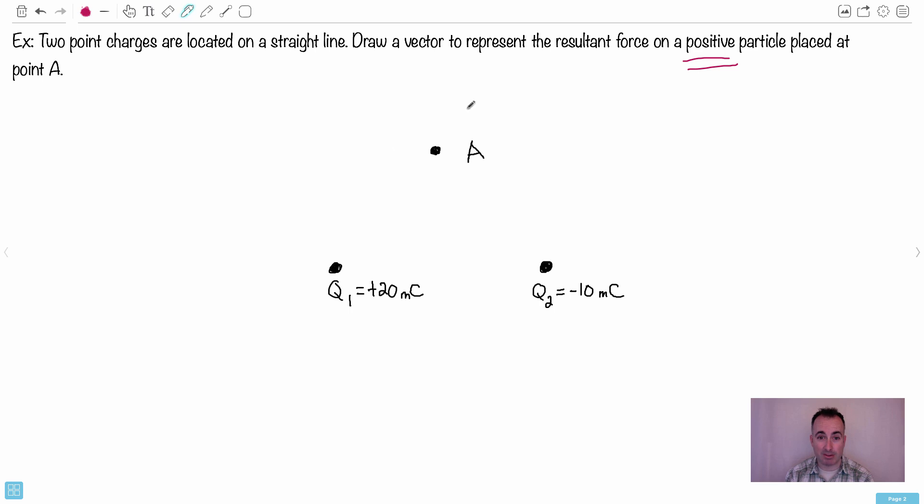Now we're going to draw a vector to represent the resultant force on a positive particle. I think the key thing here is going to be this positive particle, and it's placed at point A. So what it helps to do then is just split this up into two separate, completely separate problems. In other words, I try to just imagine, I just sort of hide one of them and just look at the force between two of them. And after that, then I would hide the other one and look at the force between the other ones. That's how I like to do it.